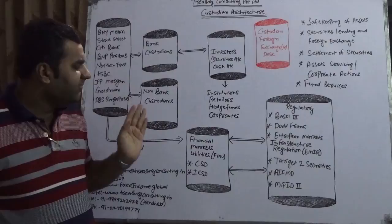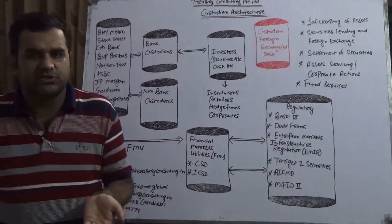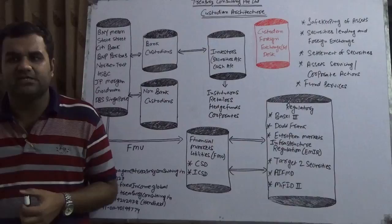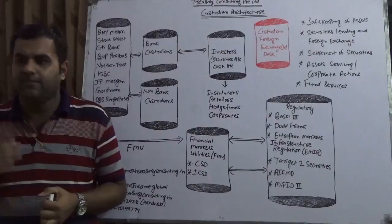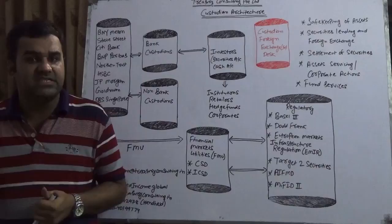There is one function that plays a very important role, which is the treasury function in custodians. The treasury function takes care of securities daily: how much is coming, how much is going, what are the corporate actions, OTTI, available for sale, held to maturity, held for trading. They take care of cash: how much cash, how much invested, how much received, what is the AAA portfolio—everything.